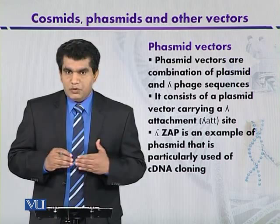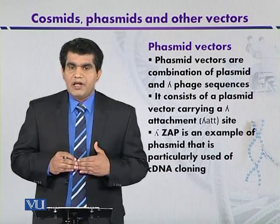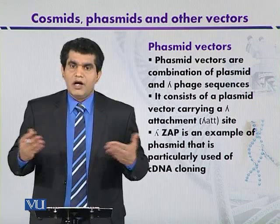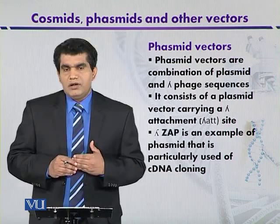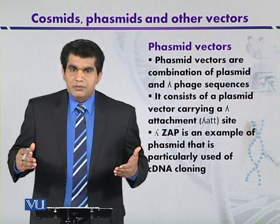Another advantage is that the foreign DNA can be excised from the lambda genome. In addition, phasmids can be used to express fusion or hybrid proteins, and if foreign DNA is inserted, RNA transcripts can also be synthesized. These are the different advantages of phasmid vectors.